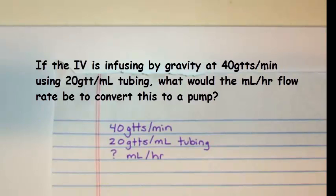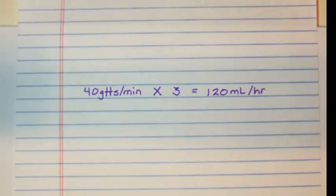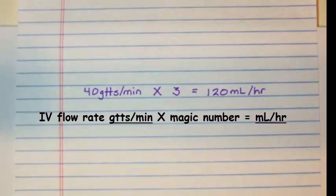For a quick example of how this would work: if the IV was infusing by gravity at 40 drops per minute through 20 drop per milliliter tubing and we needed to convert this to milliliters per hour, we would take 40 drop per minute and multiply because we're changing to milliliters per hour by the magic number which is based on the tubing.